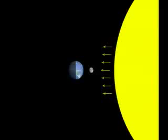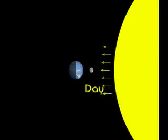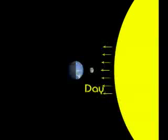When we turn toward the Sun, it's daytime. When we turn away from the Sun, it's night.